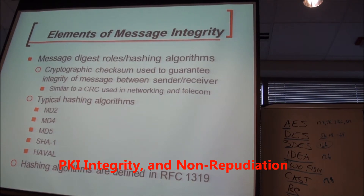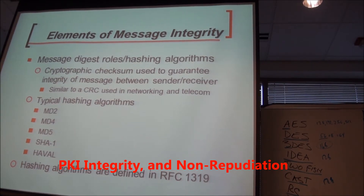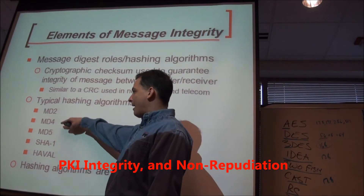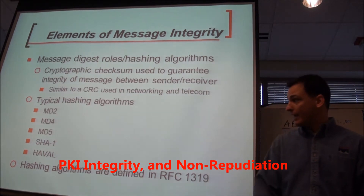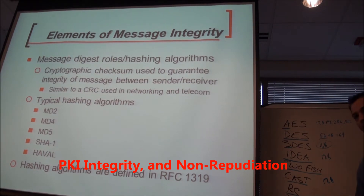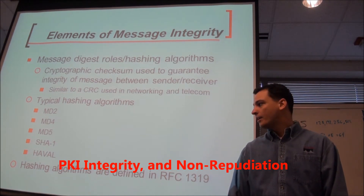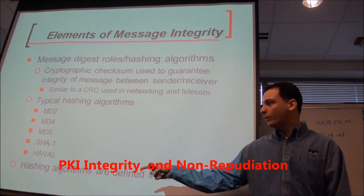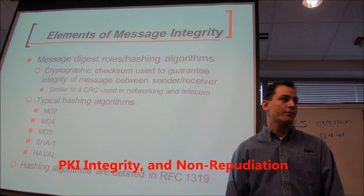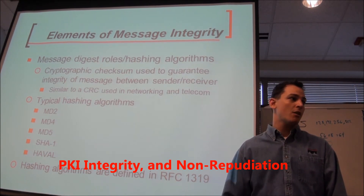Circle these — these are your hashing algorithms. Any of these would be keywords for integrity. When you see these, you have to think: integrity. We know most of them — MD5, we did a lab on MD5. Next to SHA, write 160, because SHA is 160-bit by default unless it's specified. It'll specify in its name, like SHA-256. HAVAL is variable, so the V in HAVAL stands for variable — all the rest are fixed-length output except HAVAL, which is variable.